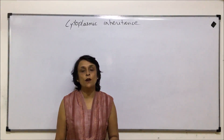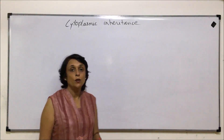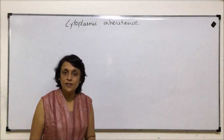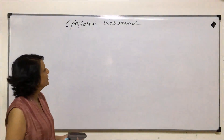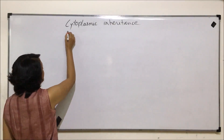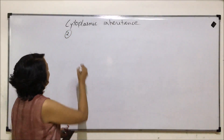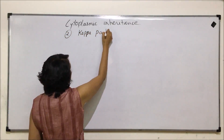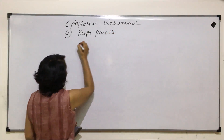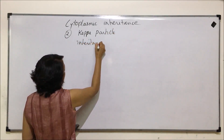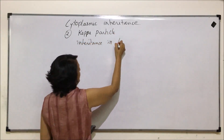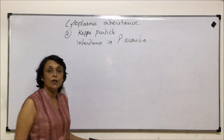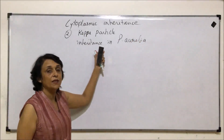In this video we'll talk about another example to understand cytoplasmic inheritance. The first one we discussed was Mirabilis, that is plastid inheritance. Here we are talking about inheritance of kappa particles in Paramecium — specifically kappa particle inheritance in Paramecium aurelia.